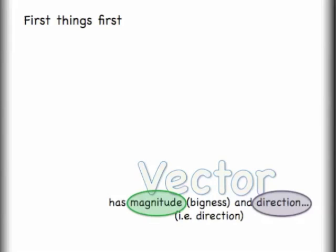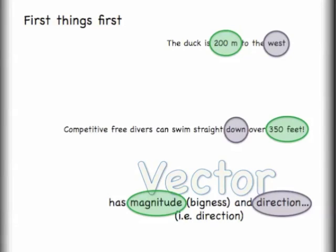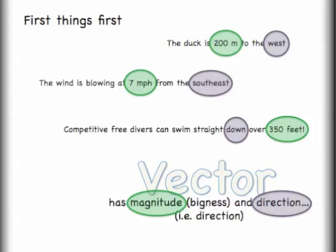If we look at vectors, which we said have magnitude and direction, I could say, for example, the duck is 200 meters to the west. I've identified both the size of the number, 200 meters, and I've identified the direction west. Competitive free divers can swim straight down over 350 feet. The wind is blowing at 7 miles per hour from the southeast.